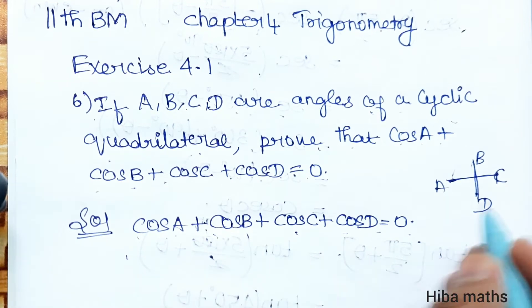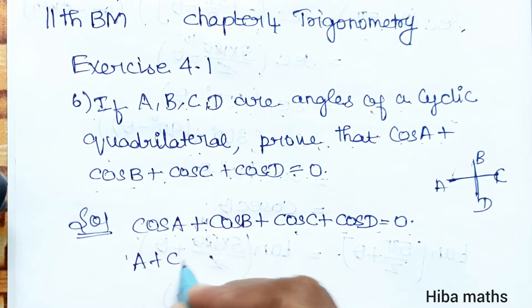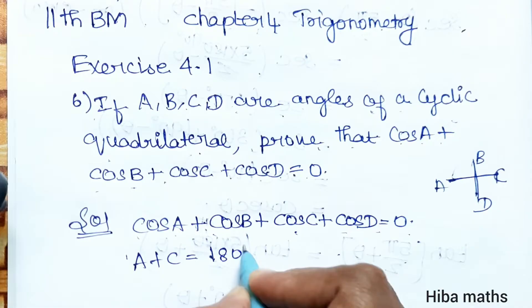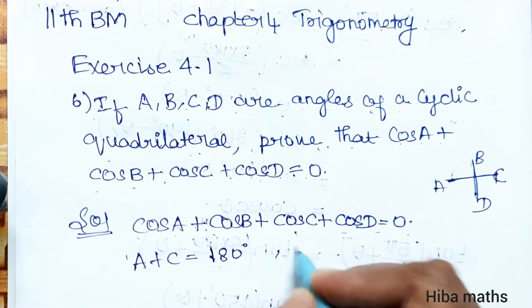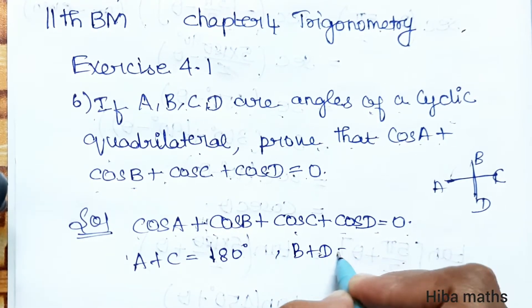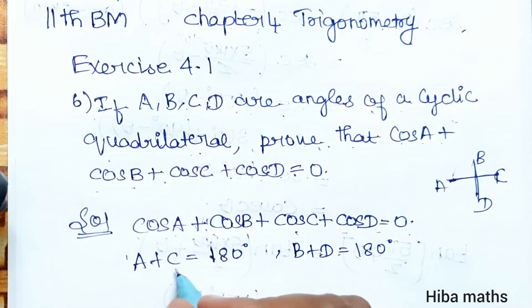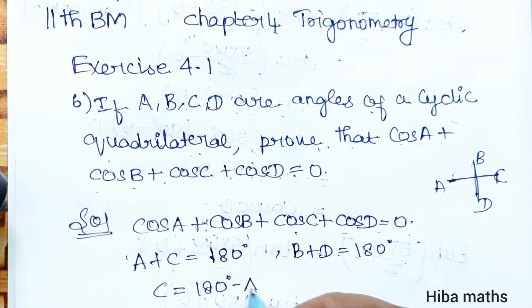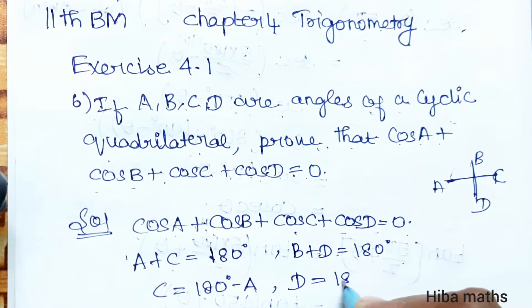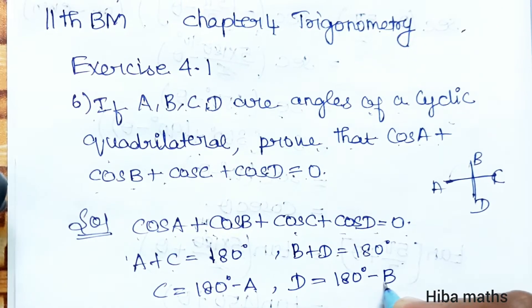If you start the diagram, you understand that A plus C is 180 degrees. In a cyclic quadrilateral, opposite angles add to 180. So B plus D will add to 180 degrees. So C is equal to 180 degrees minus A. That is why D is equal to 180 degrees minus B.